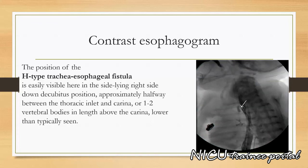The position of the H-type tracheoesophageal fistula is easily visible here in the side lying right side down decubitus position. It is located approximately halfway between the thoracic inlet and carina, or one to two vertebral bodies in length above the carina — lower than typically seen. Throughout the study the patient remains stable.